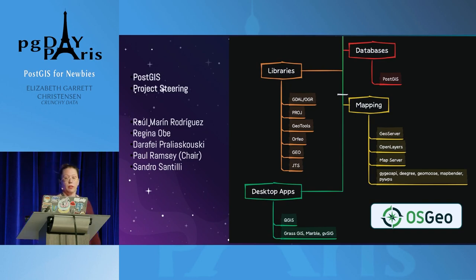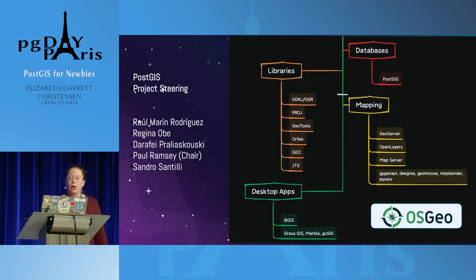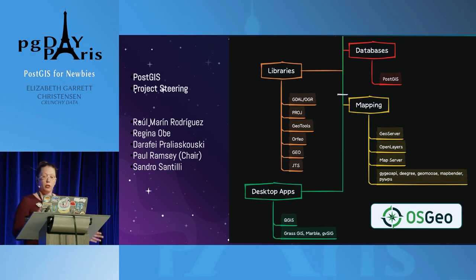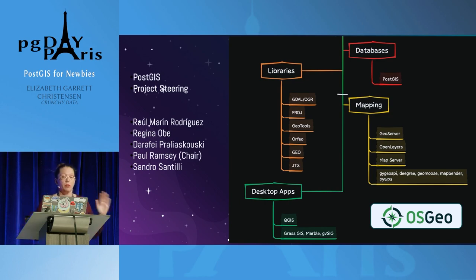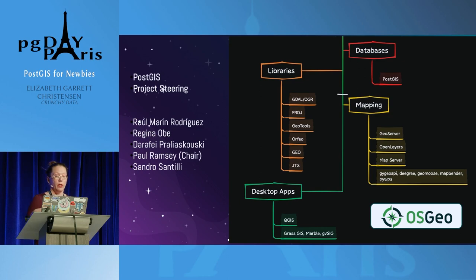The PostGIS project itself is an extension of Postgres, but it's overseen by an organization called OSGeo, the Open Source Geospatial Foundation. OSGeo sponsors an event called FOSS4G, the Free and Open Source Software for Geospatial conference. The OSGeo project space is pretty vast — PostGIS is the database underneath a bigger umbrella of OSGeo projects, including several libraries like the GDAL library or the JTS library, as well as several mapping tools and desktop apps.